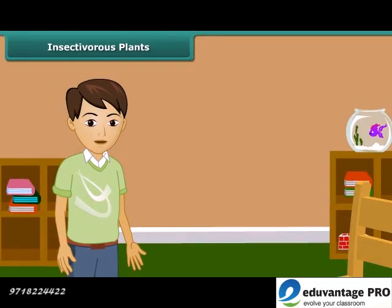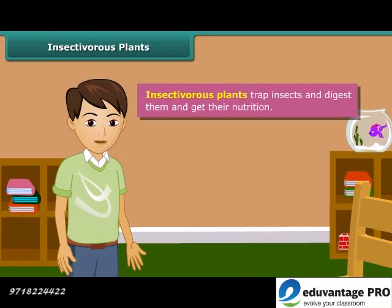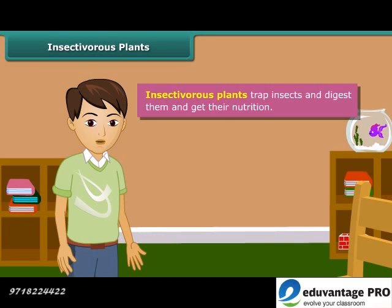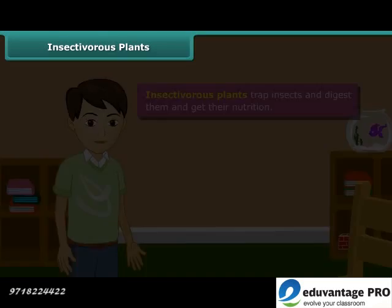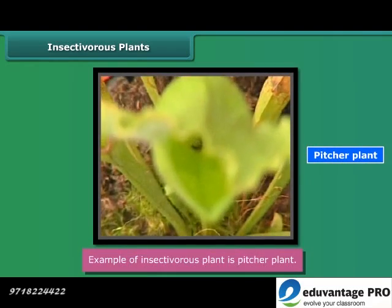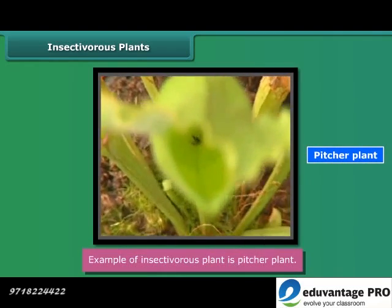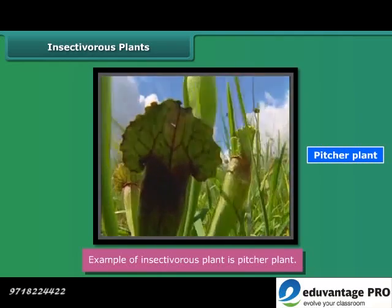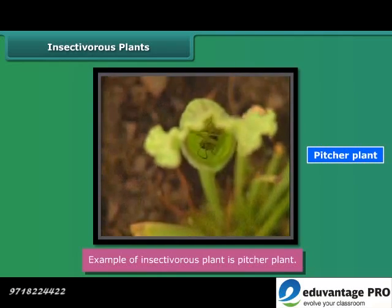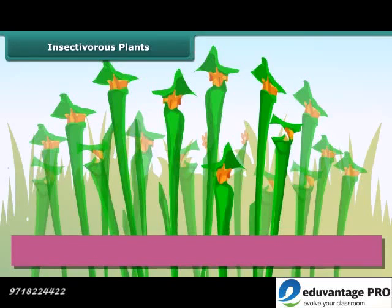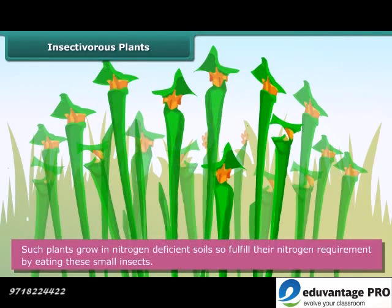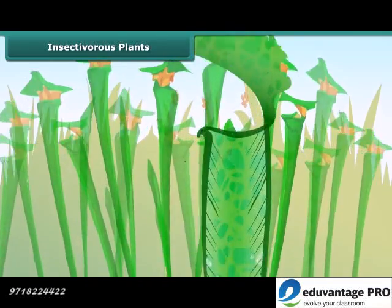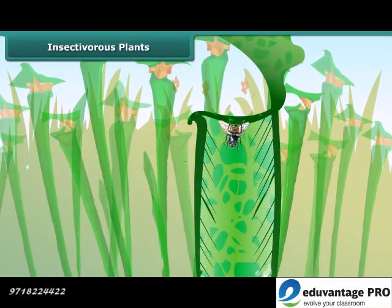The next category is insectivorous plants. There are a few plants which can trap insects, digest them, and get nutrition — for example, pitcher plants. These plants can synthesize their own food by photosynthesis, but they grow in nitrogen-deficient soils. So such plants fulfill their nitrogen requirement by eating small insects, and hence are called insectivorous plants.